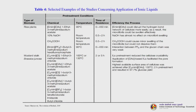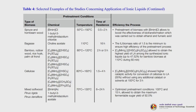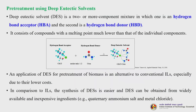A table shows selected examples of studies on ionic liquid applications, listing temperature, residence time, process efficiency, chemicals used, types of ionic liquids and different biomass types. Please refer to it later.